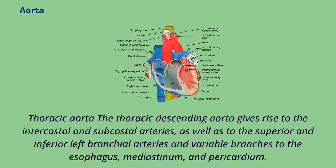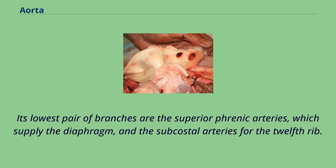The thoracic descending aorta gives rise to the intercostal and subcostal arteries, as well as to the superior and inferior left bronchial arteries and variable branches to the esophagus, mediastinum, and pericardium. Its lowest pair of branches are the superior phrenic arteries, which supply the diaphragm, and the subcostal arteries for the twelfth rib.